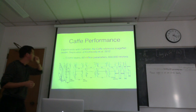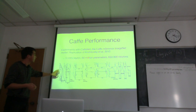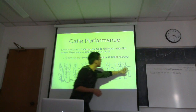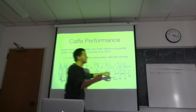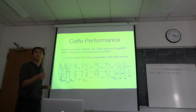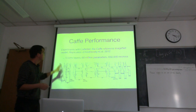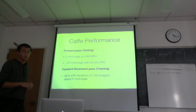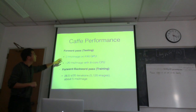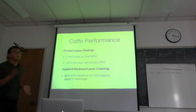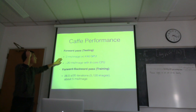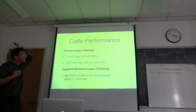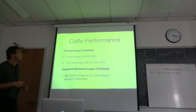In testing, you give an image and the network gives you the label. The advantage of using GPU is about 10 times faster than using CPU. Both are using Caffe — one with CPU only and one using GPU only for the feed-forward pass. For training, it's slightly different: you have a feed-forward pass and then you back-propagate the gradient, a backward pass through the neural network. The speed is a bit slower — it takes about five milliseconds per image.